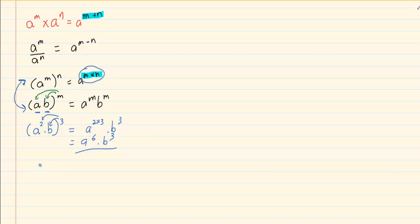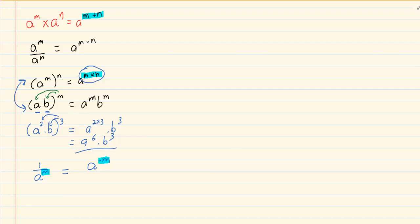Then we have the rule of an exponent with a fraction. If you are moving any number or unknown with an exponent from its original place in the fraction — from the bottom to the top or the top to the bottom — the sign of the exponent changes. The last rule is that anything to the power of 0 is equal to 1.